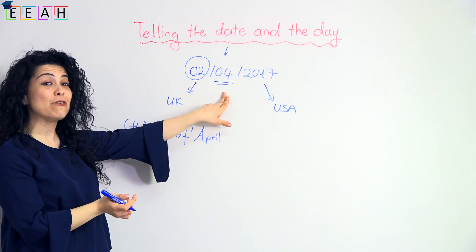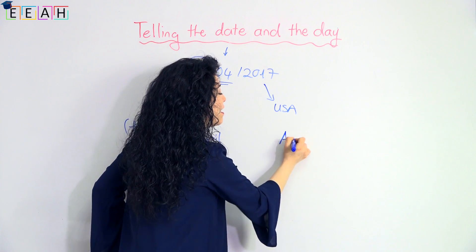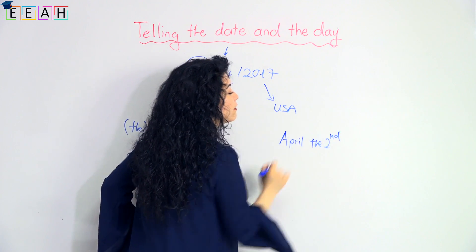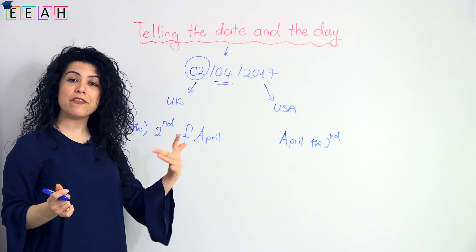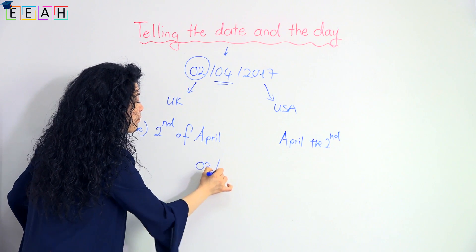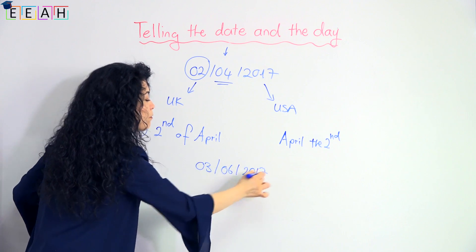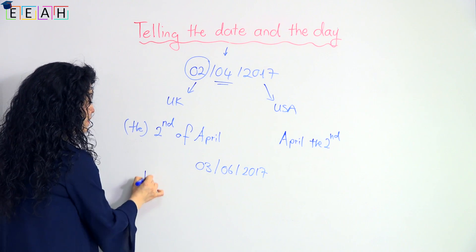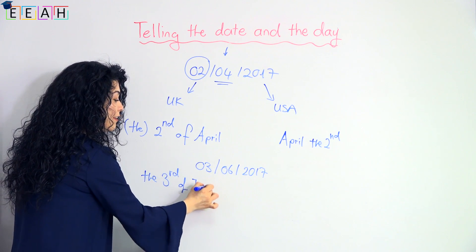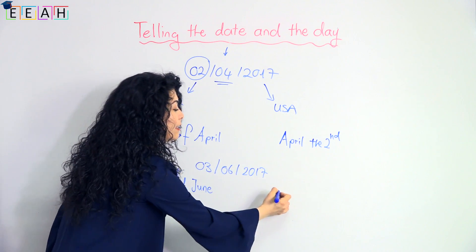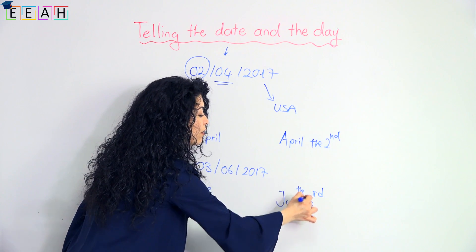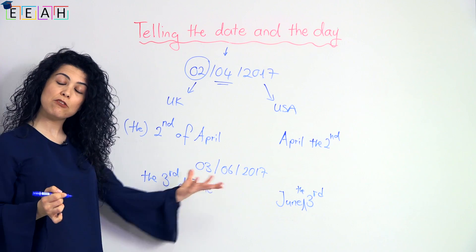British people say the date like this. If you're American, you say the month first: April the second. Let's try another one. British way: it is the third of June. American way: it is June the third. That's how you say it.